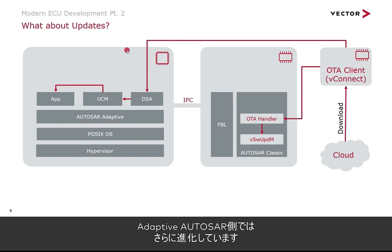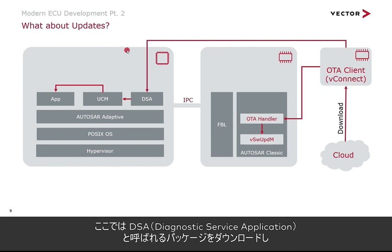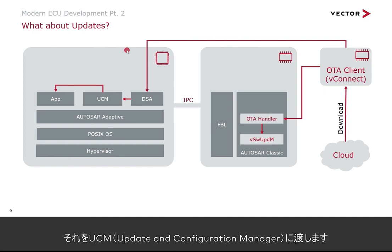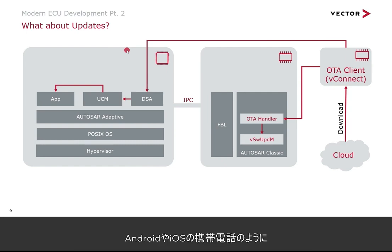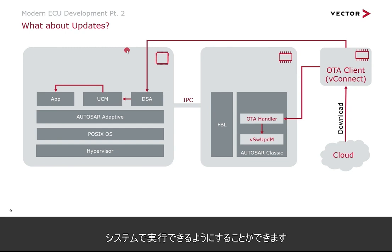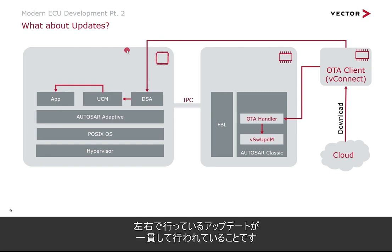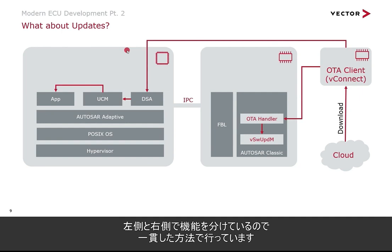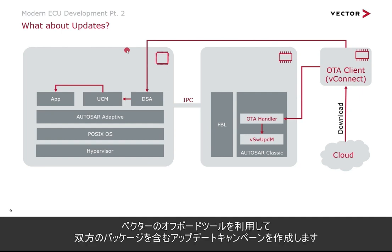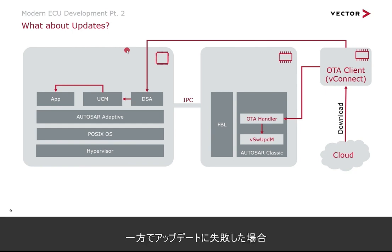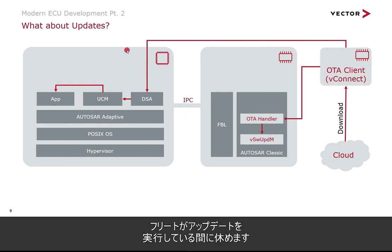On the Adaptive AUTOSAR side, it is even more advanced. We download the package via a diagnostic service application and pass it to the UCM — the Update and Configuration Manager — which can update applications in place: installing an application and making it available to the system without a reboot, just as you know from Android or iOS. Importantly, since functions are split between both sides, updates are performed in a consistent manner. Our off-board tooling helps you create an update campaign containing packages for both sides, and our onboard software guarantees that if one side fails during the update, a rollback is also performed on the other side.